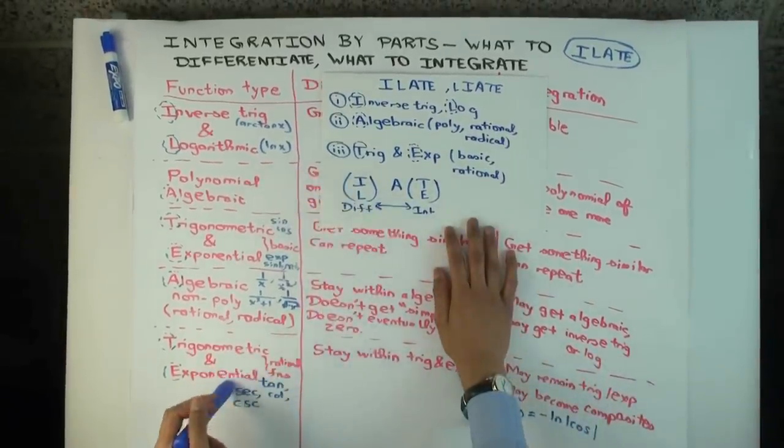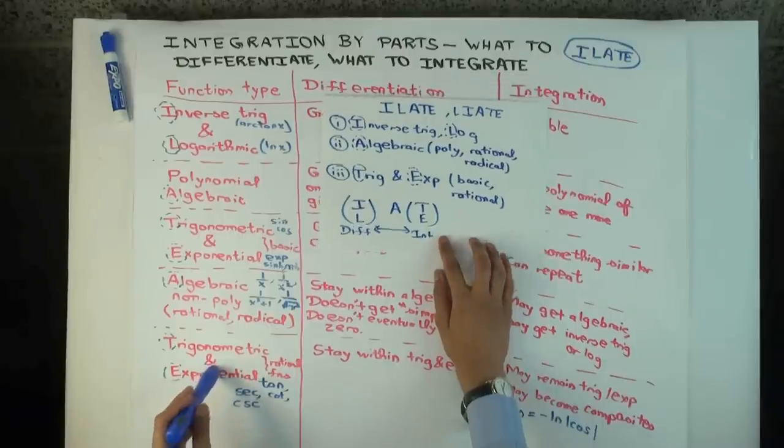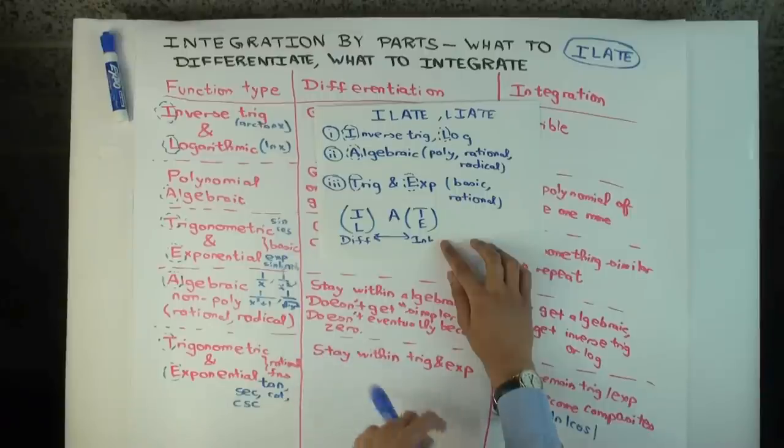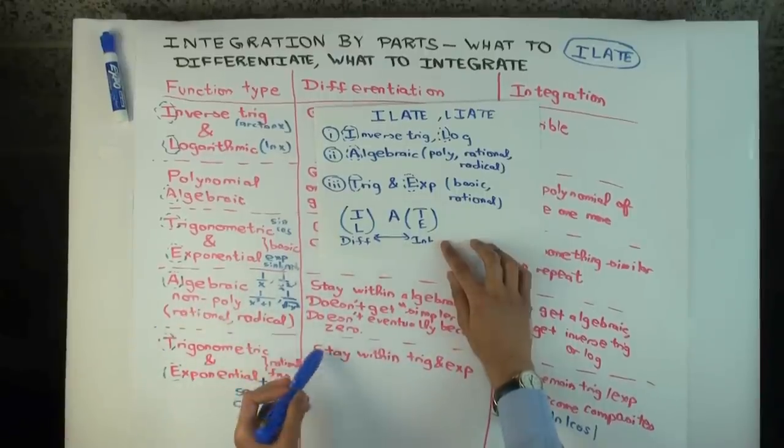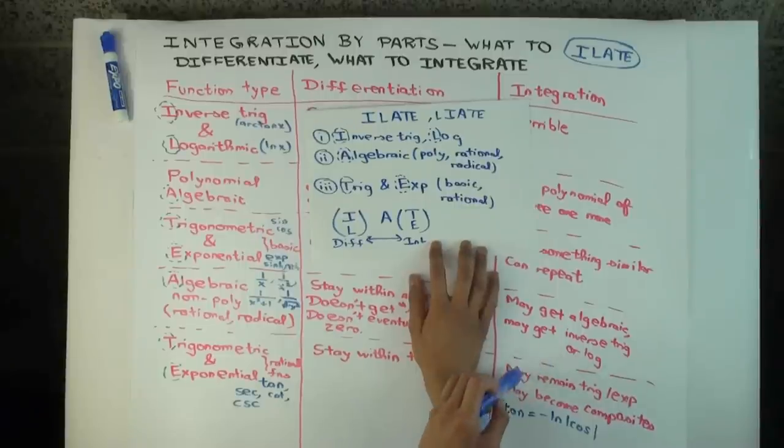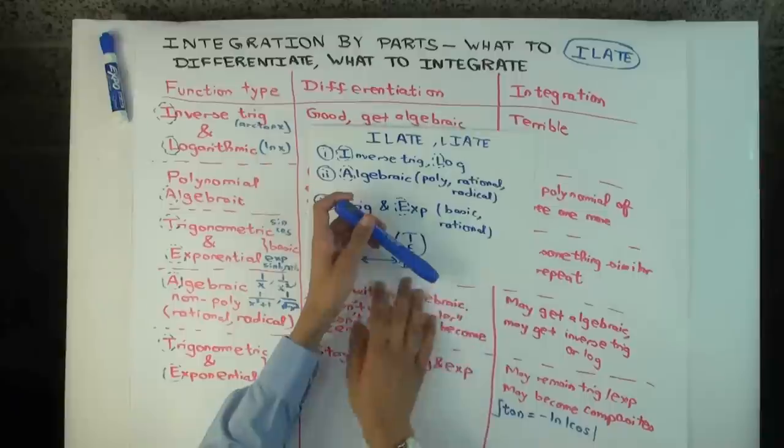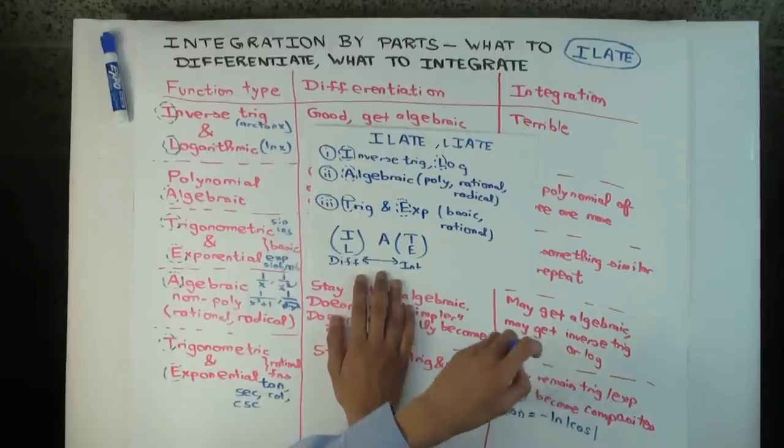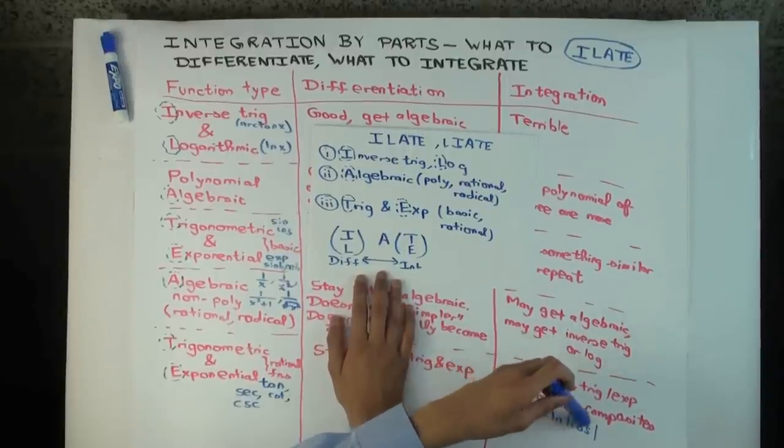Similarly, for the trigonometric and exponential, when you differentiate you do stay within trigonometric exponential, but it's not really staying equally complex. It could get more messy. And when you integrate trigonometric and exponential, you can get really messy things, like down here. Okay? The tan gets a negative log cosine.